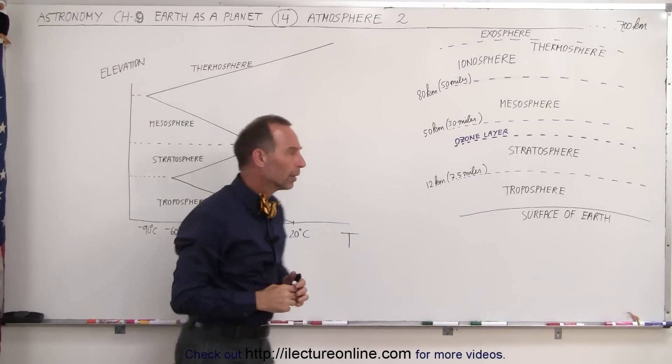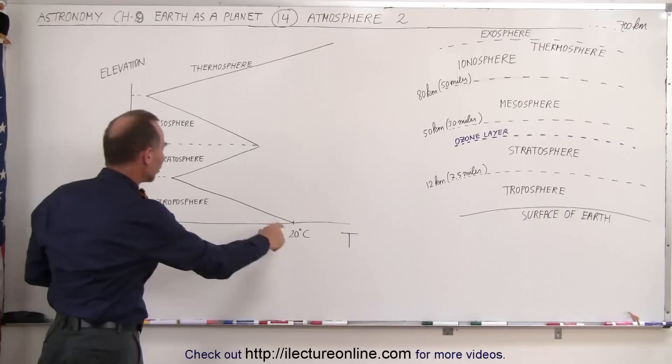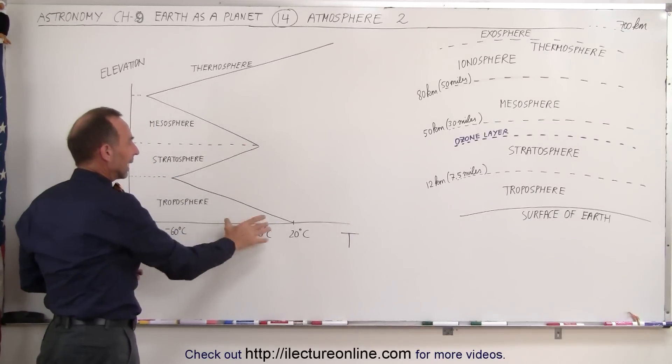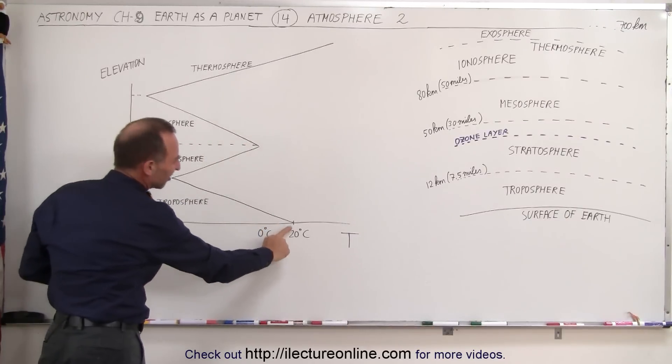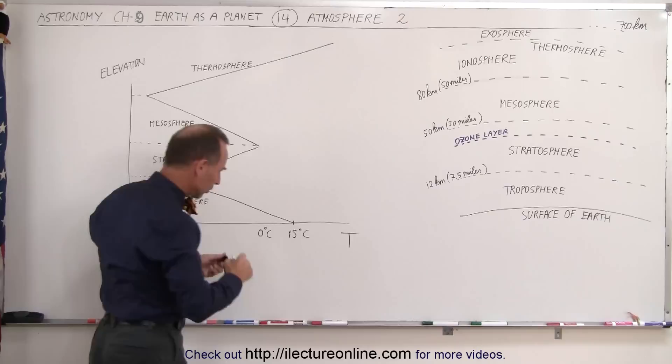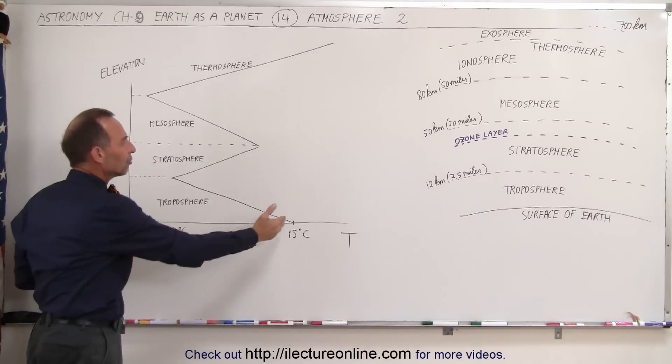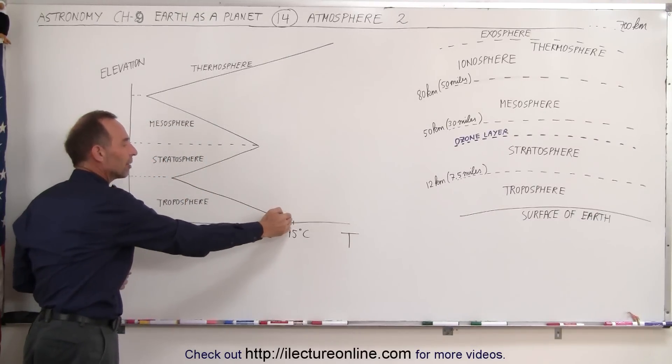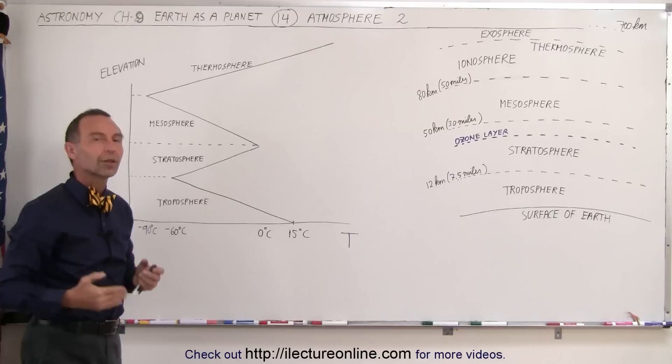So why the different layers? Well, it turns out that if you look at the temperature at the various layers, notice that the Earth's temperature, probably more like an average temperature of about 15 degrees centigrade on the Earth's surface, you can see that as you go higher and higher up in elevation, the temperature drops rather quickly. That's called the lapse rate.